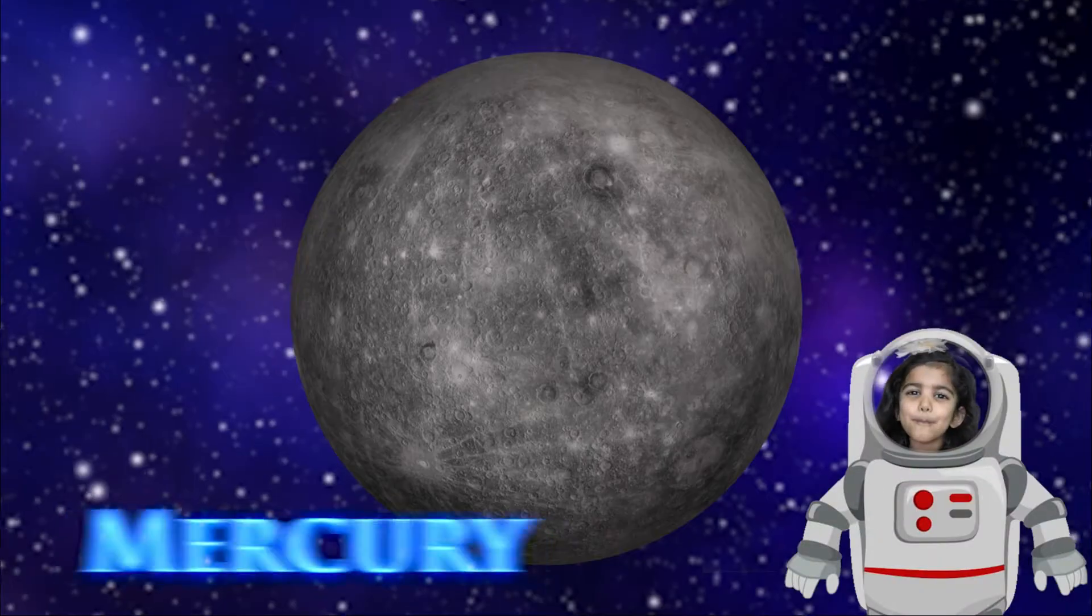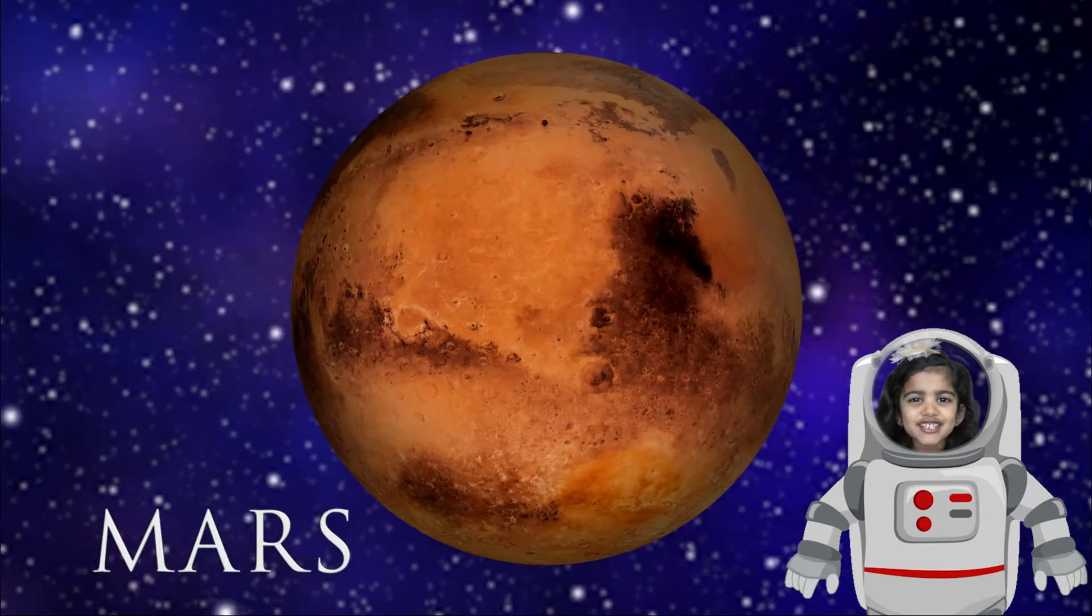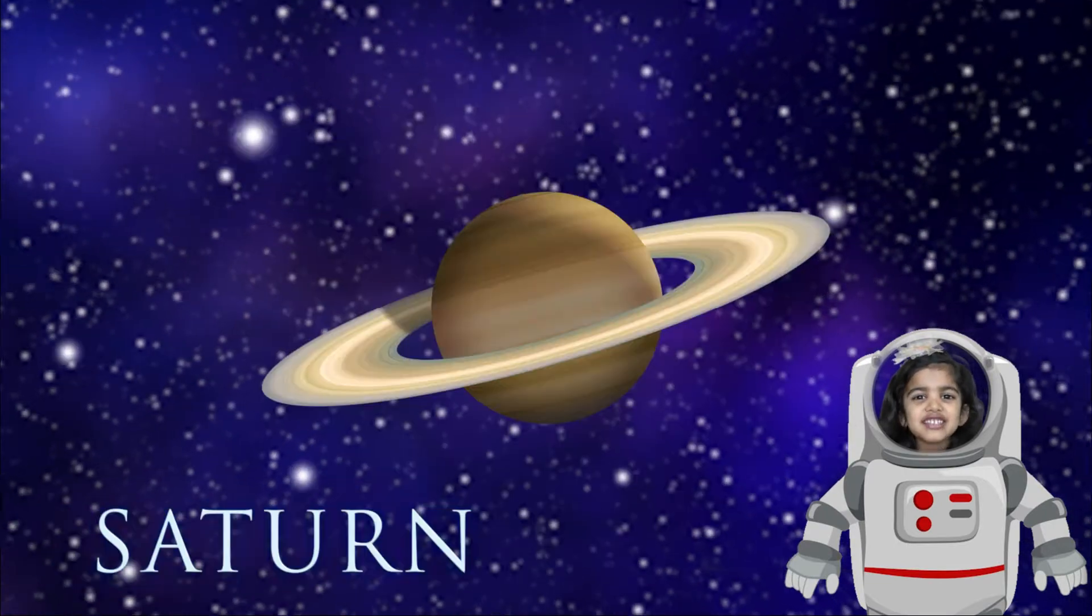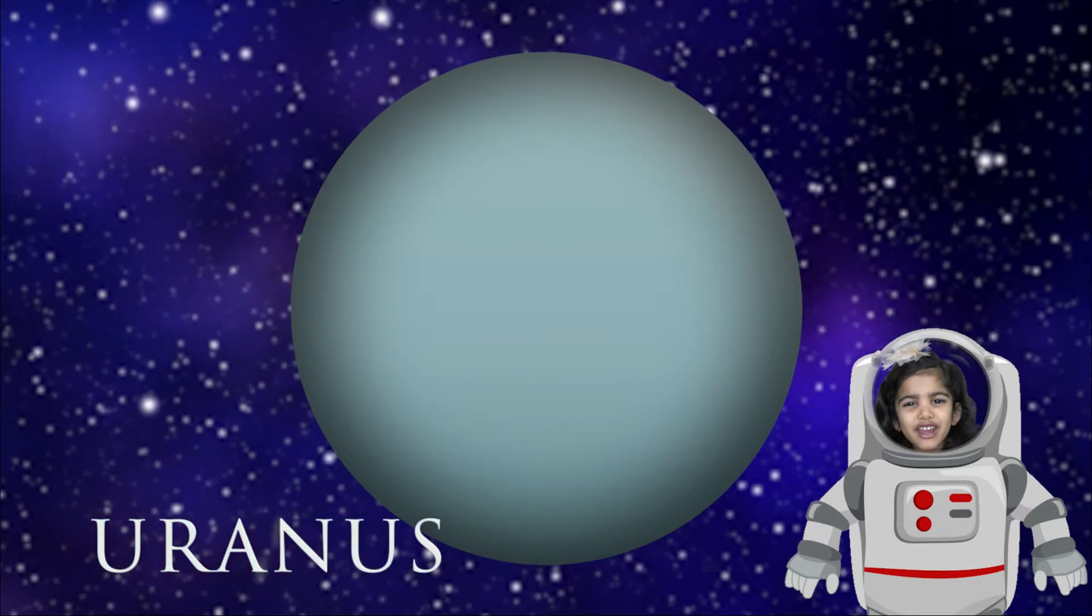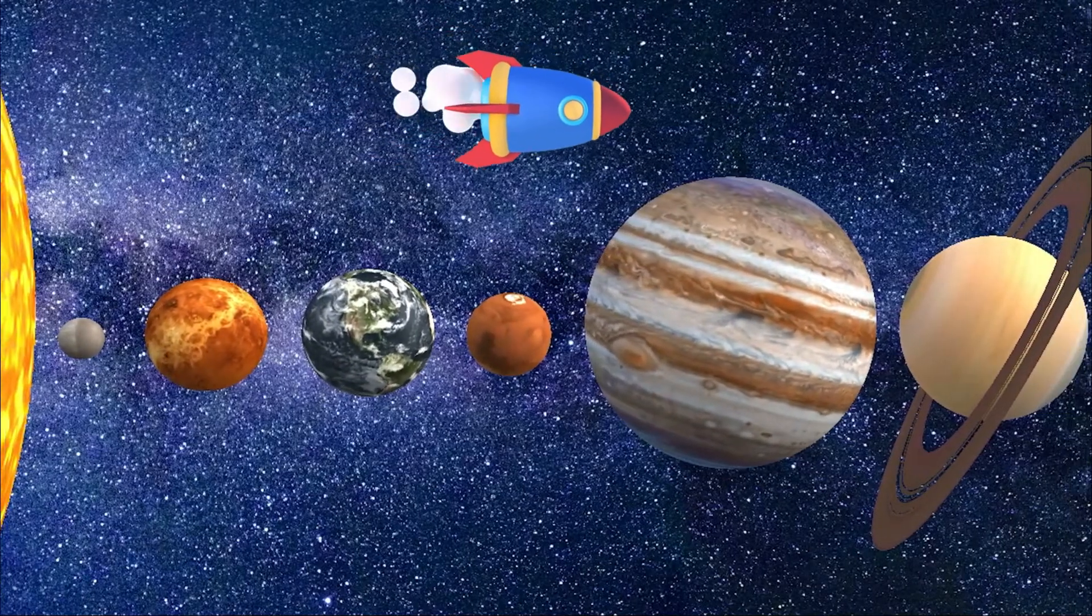let me show you. Sun, Mercury, Venus, Earth, Mars, Jupiter, Saturn, Uranus and Neptune. This is our solar system.